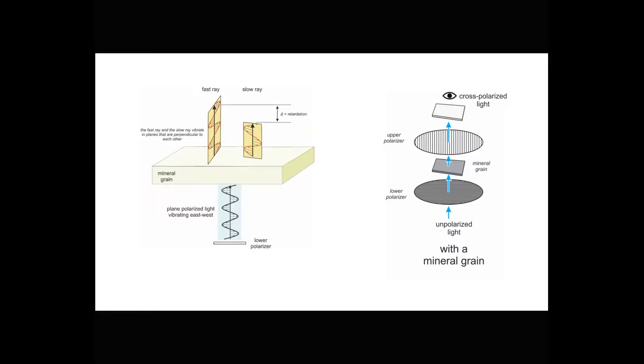Above the upper polarizer, the rays then are vibrating in the same plane, and they can interfere to produce interference colors that we'll talk about later.